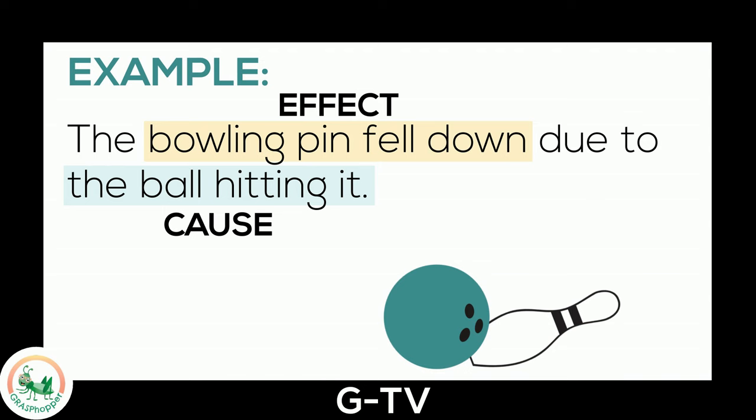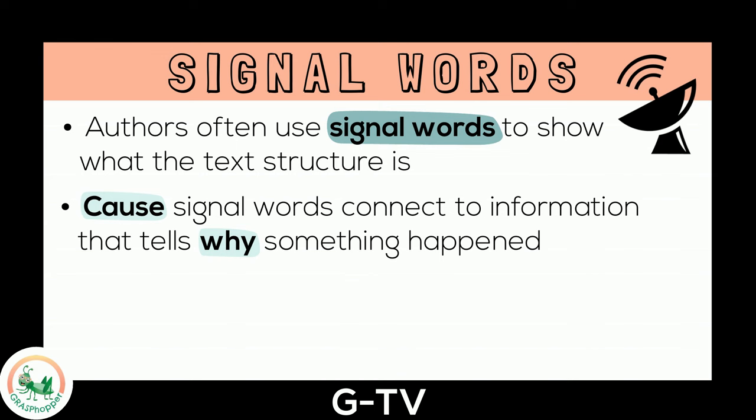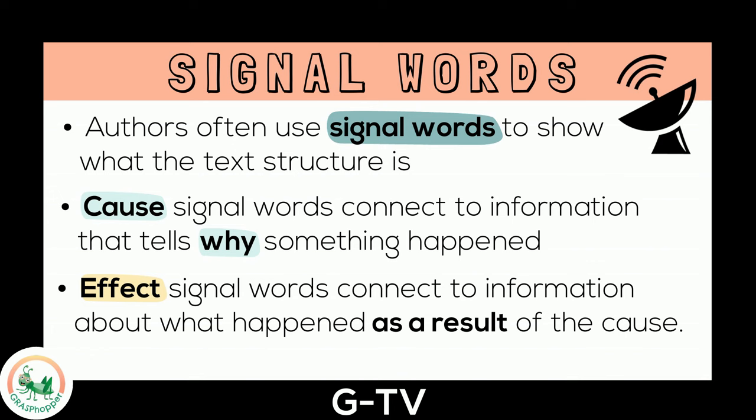Authors often use certain signal words to show what the text structure is. Cause signal words connect to information that tells why something happened. And effect signal words connect to the information about what happened as a result.